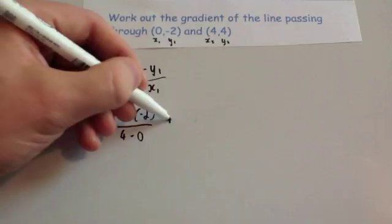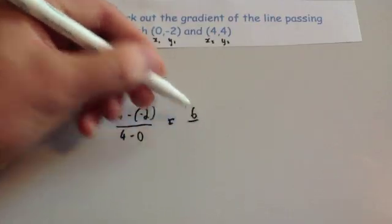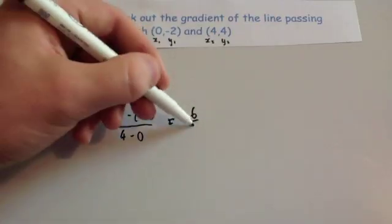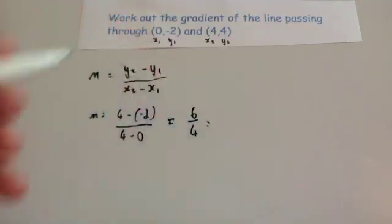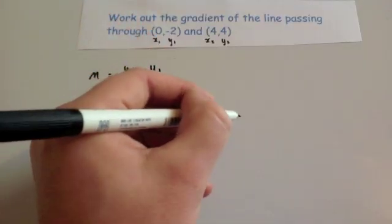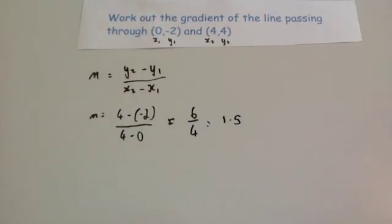So that would give us 4 minus minus 2, well 4 minus minus will be 4 plus 2, which is 6, over 4 subtract 0 is 4. And then 6 divided by 4, well that's going to be equal to 1.5. Remember you can just half it and half it again, 1.5.